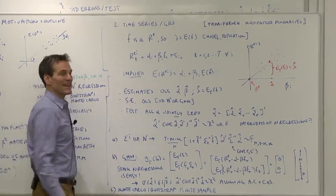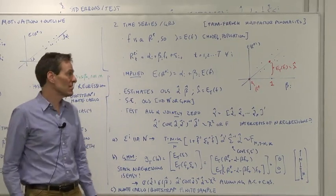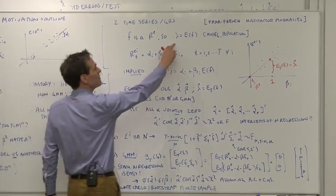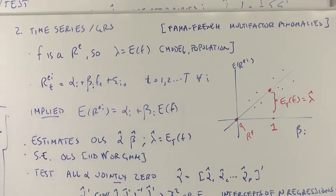Assumption one, the factor has to be an excess return itself. It's a traded portfolio as in the case for the capital asset pricing model. As a result, the price of risk is the mean of the factor, at least in model or population. So those two things are linked together.